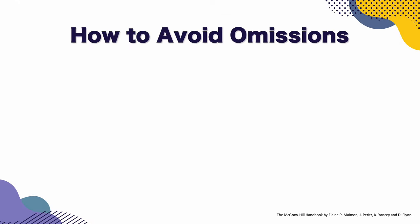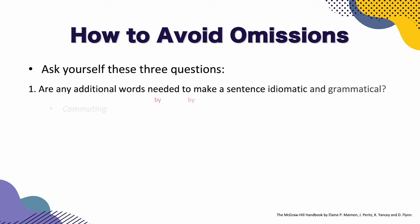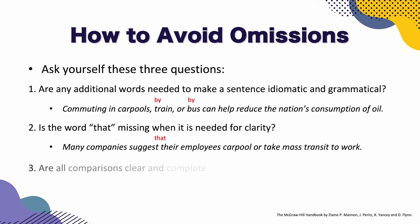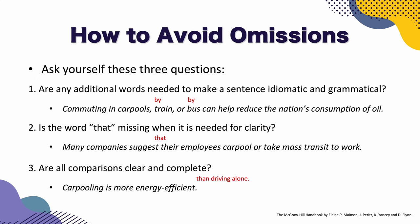We are going to discuss how to avoid omissions. Ask yourself these three questions. Number one: are any additional words needed to make a sentence idiomatic and grammatical? For example: 'Commuting in carpools, train or bus can help reduce the nation's consumption of oil.' If you add the preposition 'by': 'Commuting in carpools, by train or by bus can help reduce the nation's consumption of oil.' It makes more sense.